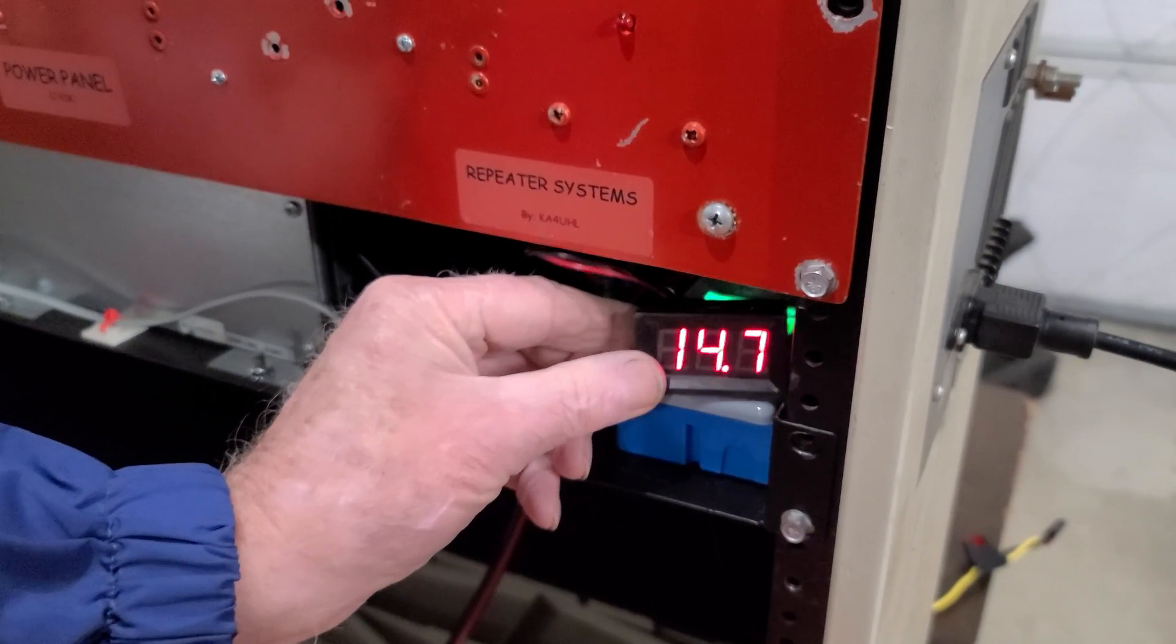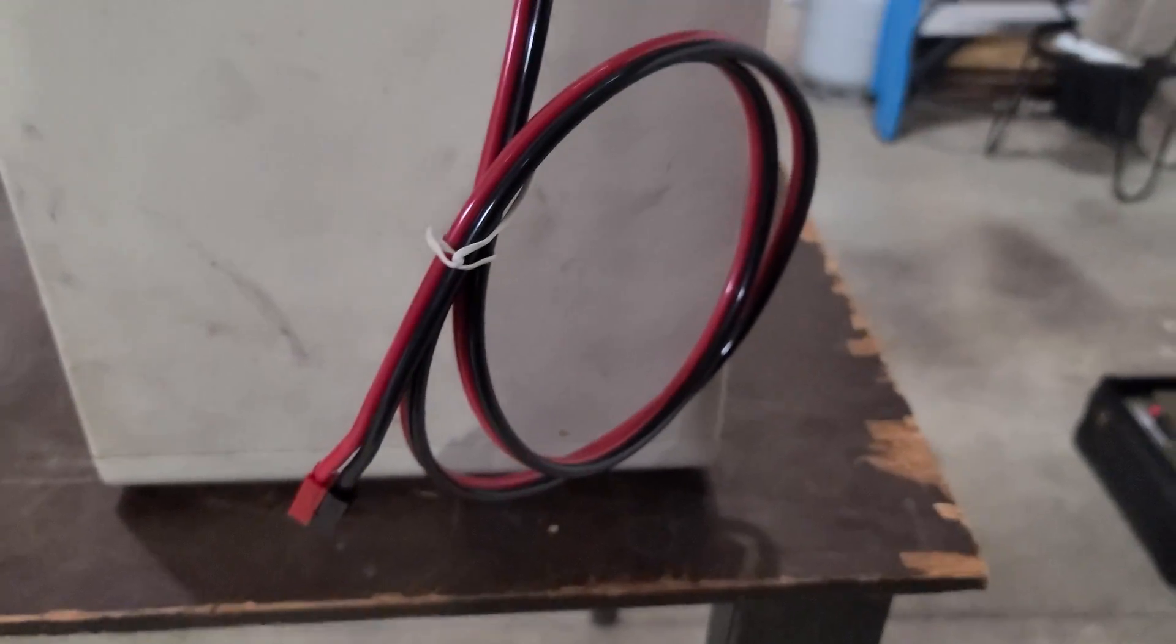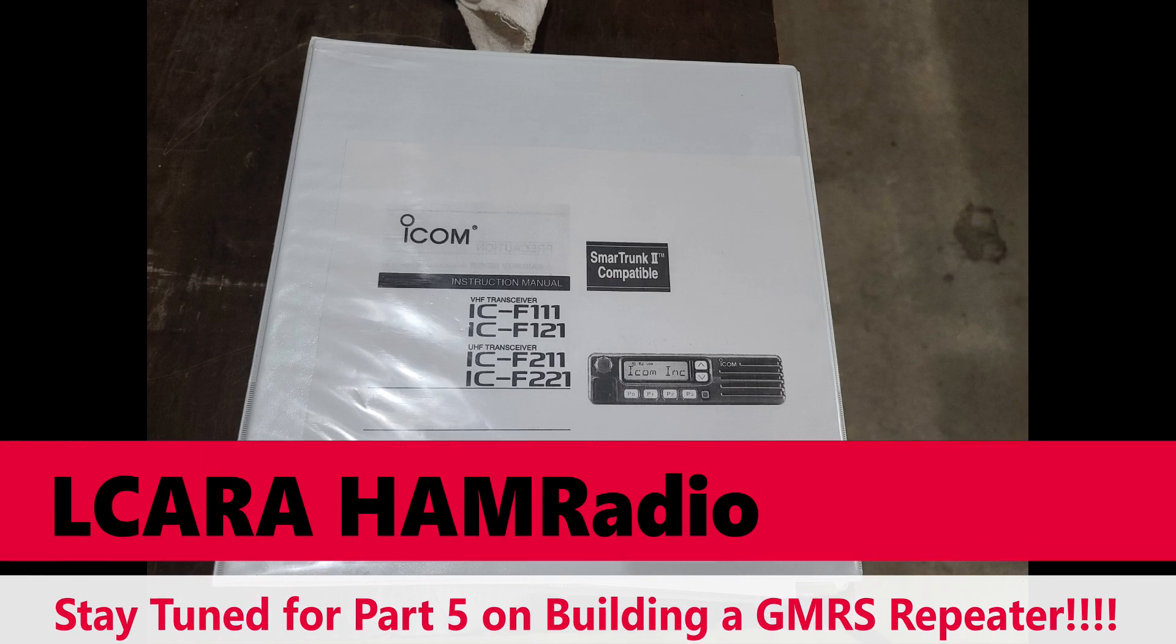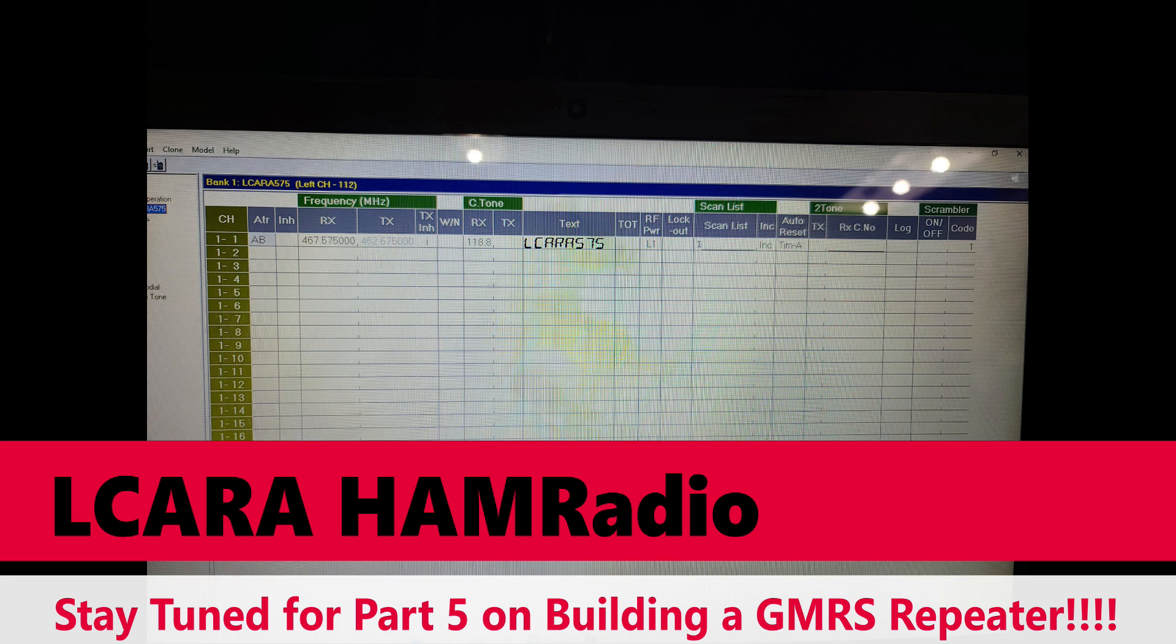And so we are done. And there's the Anderson power flow coming out the correct knockout. In our next video, we're going to talk about programming the radios just to make sure they're programmed the way they need to be for receive and transmit. And we'll need to adjust the termination panel as well. So stay tuned for part 5 in the GMRS repeater build.